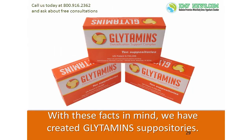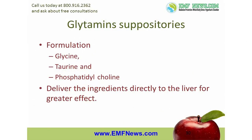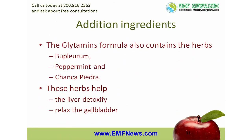With these facts in mind, we have created Gleitamins suppositories. Gleitamins suppositories contain glycine, taurine, and phosphatidylcholine to help support the body in both dissolving biliary sludge and gallstones as well as preventing them from recurring. Since Gleitamins are in suppository form, they are able to deliver the ingredients directly to the liver through the portal vein for greater effect. The Gleitamins formula also contains the herbs bupleurum, peppermint, and chanca piedra, which are used to further help the liver detoxify and to help relax the gallbladder so that as the bile begins to flow, stones can pass out more easily.